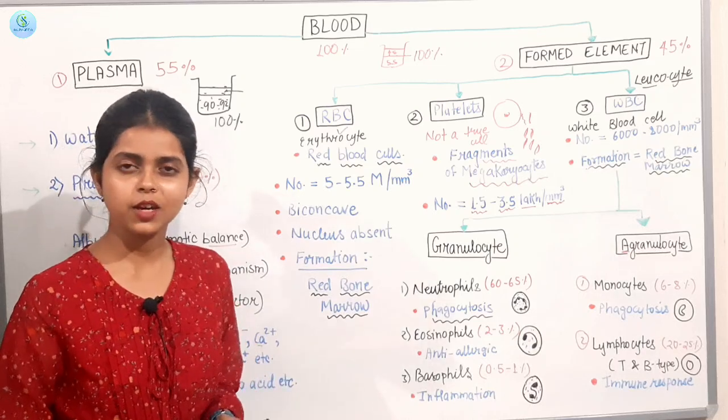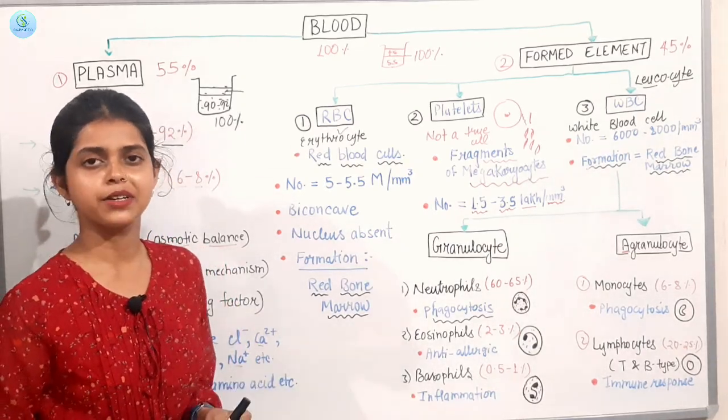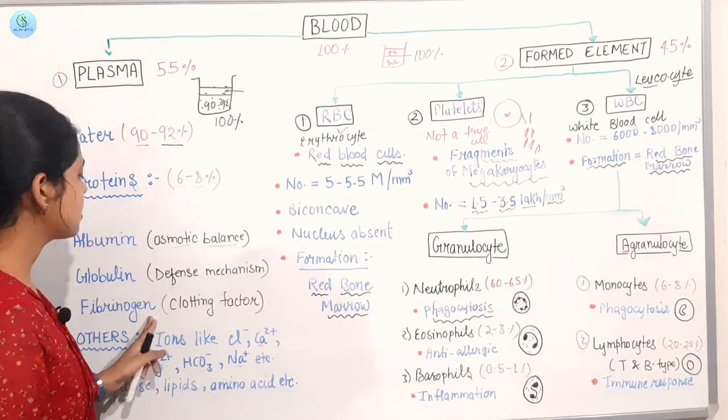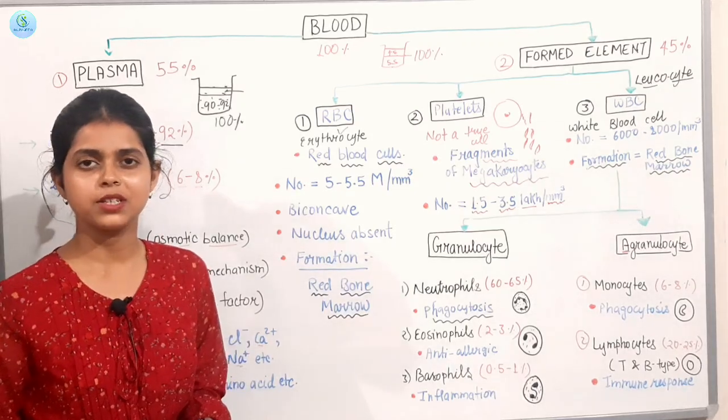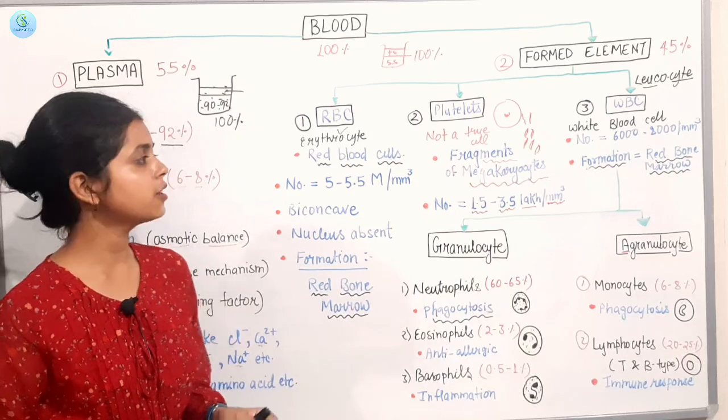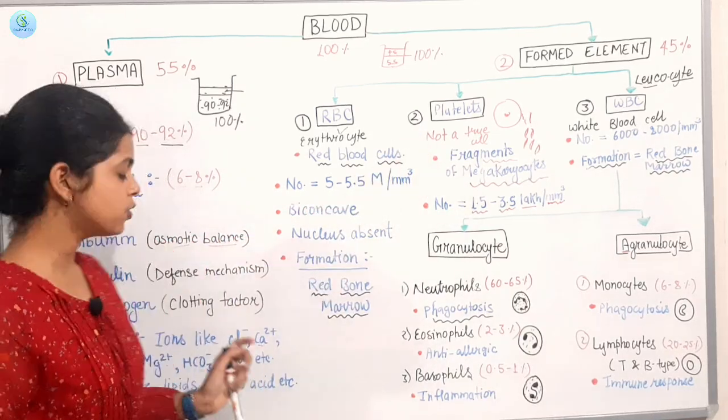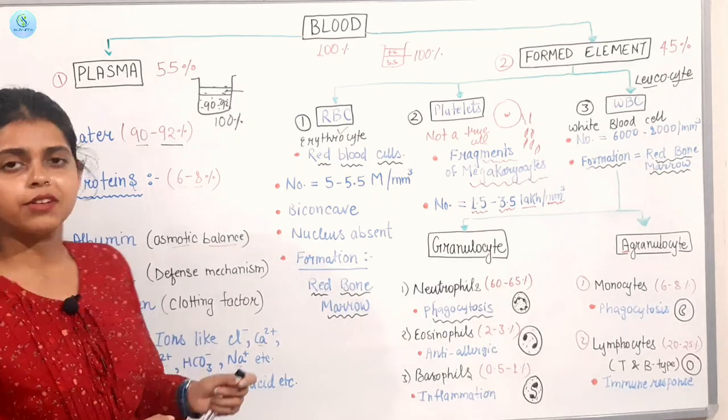The third is our fibrinogen. When bleeding is done, we work on the clots. The fibrinogen is inactive form. It activates the platelets. Then what happens? These are the platelets. These are fibrinogenes.